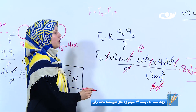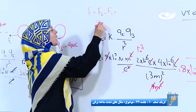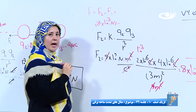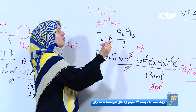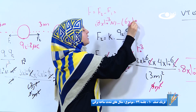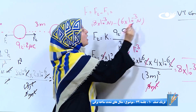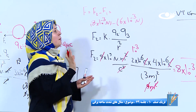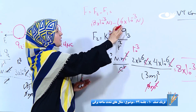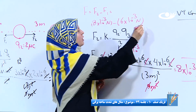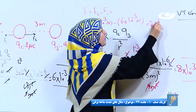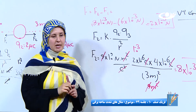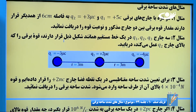مقدار قوه دوم را داریم ۸ ضرب ۱۰ به توان منفی ۳ نیوتن، منفی در قوس، مقدار قوه اول را داریم ۶ ضرب ۱۰ به توان منفی ۳ نیوتن. چون هر دو عدد توان‌دار ما با هم دیگر برابر هستن، پس ما یکی از اینها را در نظر می‌گیریم. از ۸ که ۶ کم شود برای ما می‌ماند دو ضرب ۱۰ به توان منفی ۳ نیوتن. ما مقدار قوه مجموعی را پیدا کردیم.